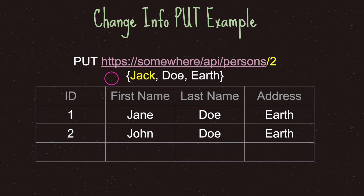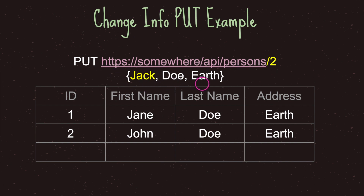Let's say we want to change the information with the PUT method. We keep the API URL the same — in this case, persons with ID number 2 — and instead of John, we change the first name to Jack. However, because we're using the PUT method, we must provide all values in the table: first name, last name, and address. Even though we do not want to change last name and address, we must still provide that information. When we pass this to the API server, it will change the first name on row number 2.